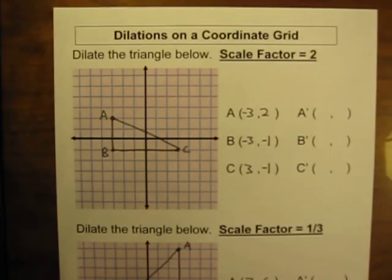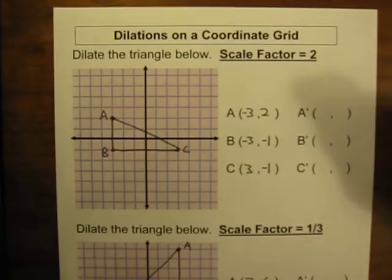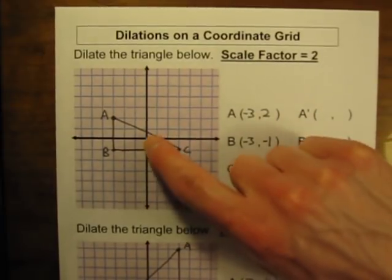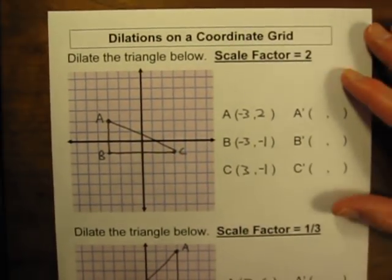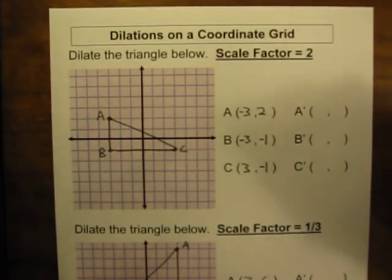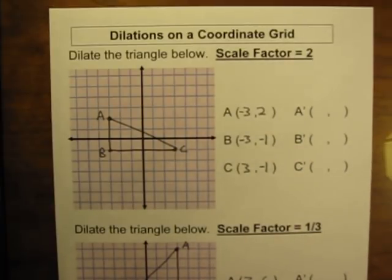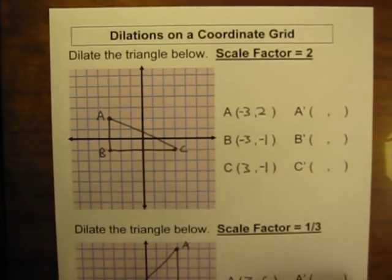Dilations are different. In a dilation, you will be changing the size. If you forget what a dilation is, think about going to the eye doctor. The first thing the eye doctor will do is put drops in your eyes to get that pupil to expand, to grow, to get wider — that allows the doctor to shine the light in and see inside the eye. The point is that your pupil, when it dilates, it is growing, it is changing size.